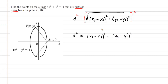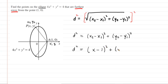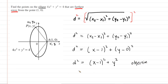We begin plugging in values. We let one coordinate be (x1, y1) and the other be (x2, y2). Substituting into the distance squared equation, x2 is x and x1 is 1, and y2 is y while y1 is 0. This simplifies to: d squared equals (x minus 1) squared plus y squared. This is our objective function, because our objective is to maximize this distance squared value.